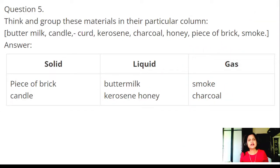Question 5: Think and group these materials in their particular column: buttermilk, candle, curd, kerosene, charcoal, honey, piece of brick, smoke. Answer: Solid - piece of brick and candle. Liquid - buttermilk, kerosene, honey. Gas - smoke and charcoal.